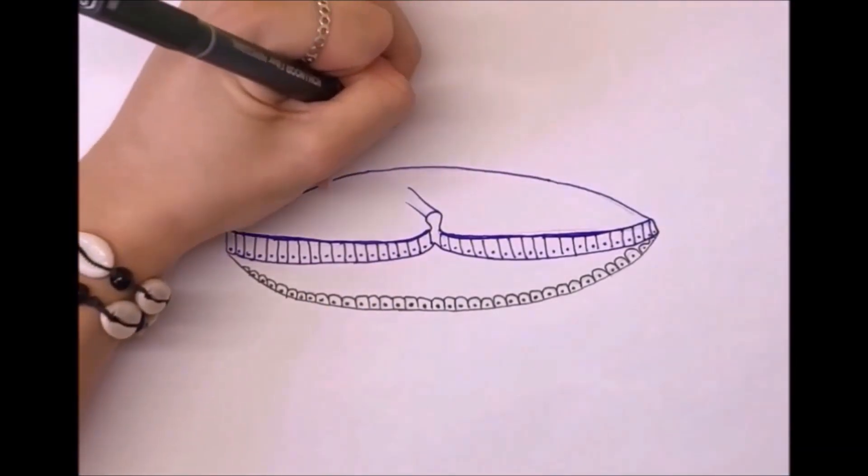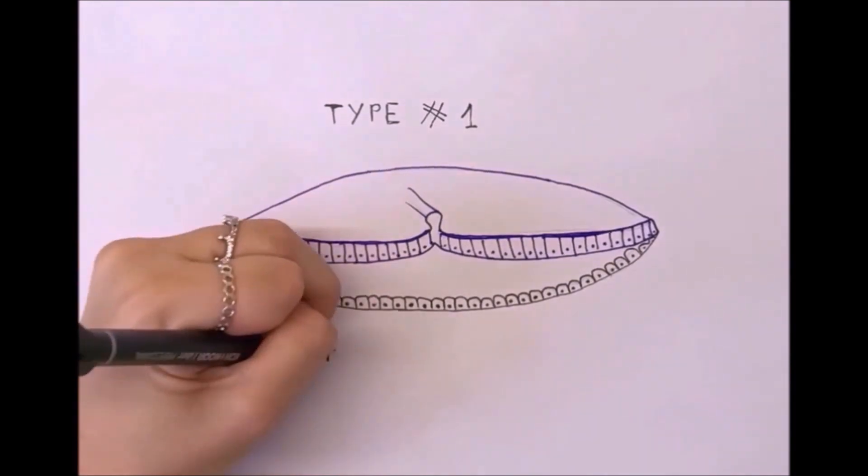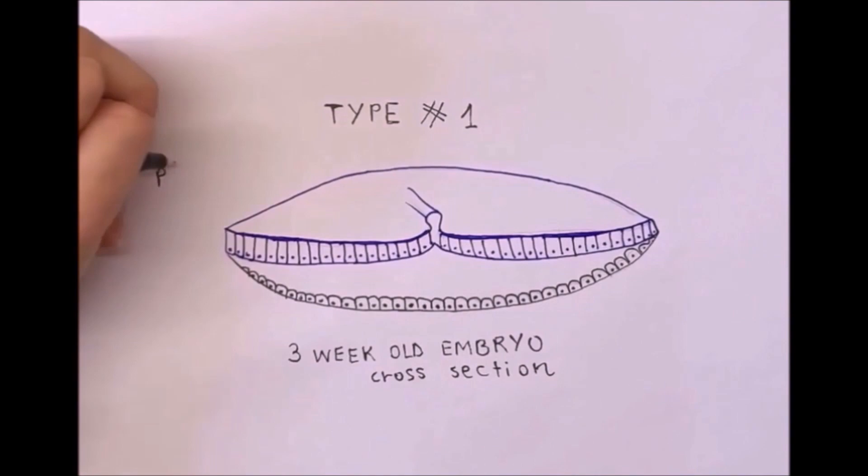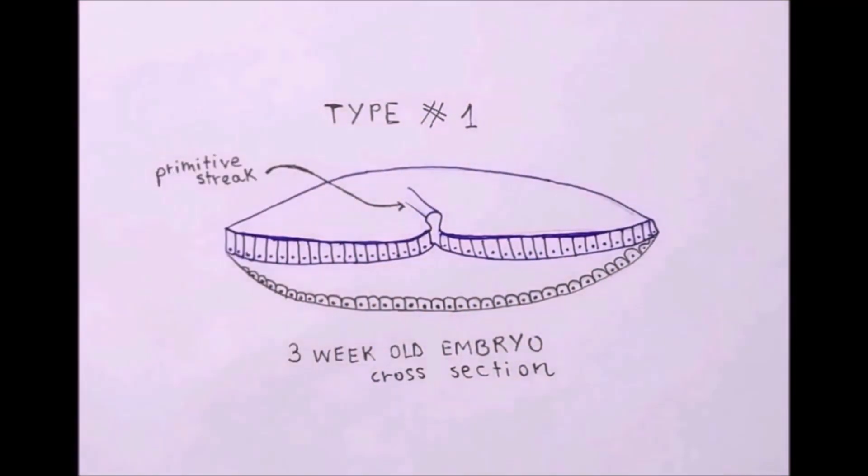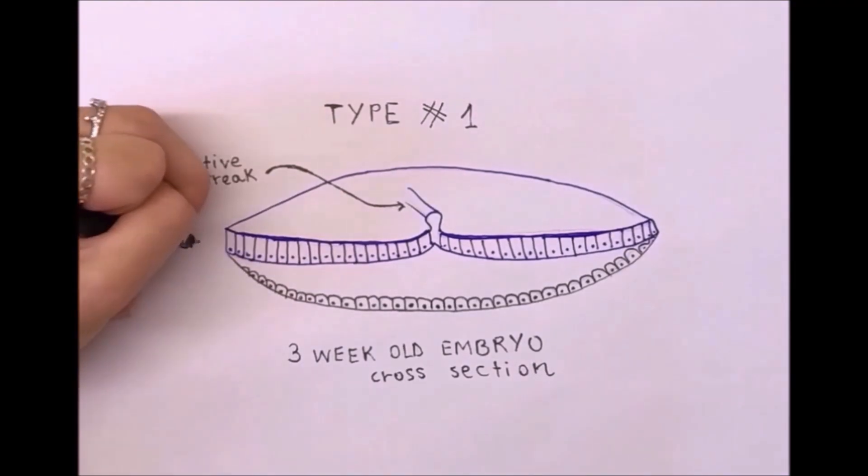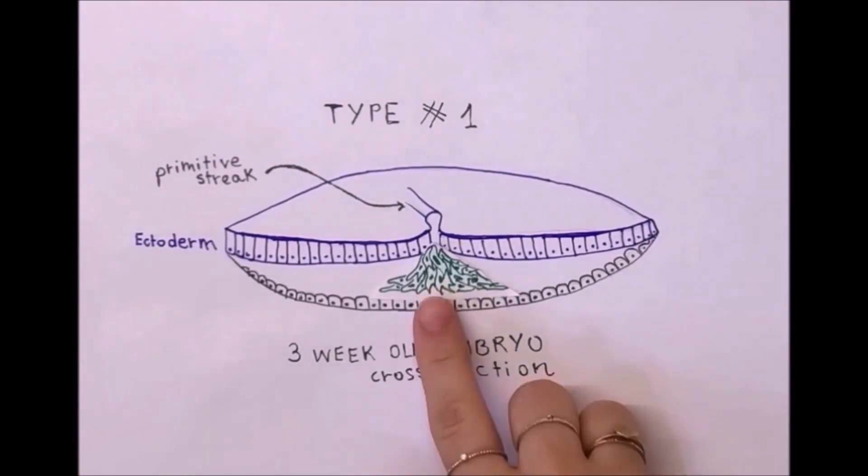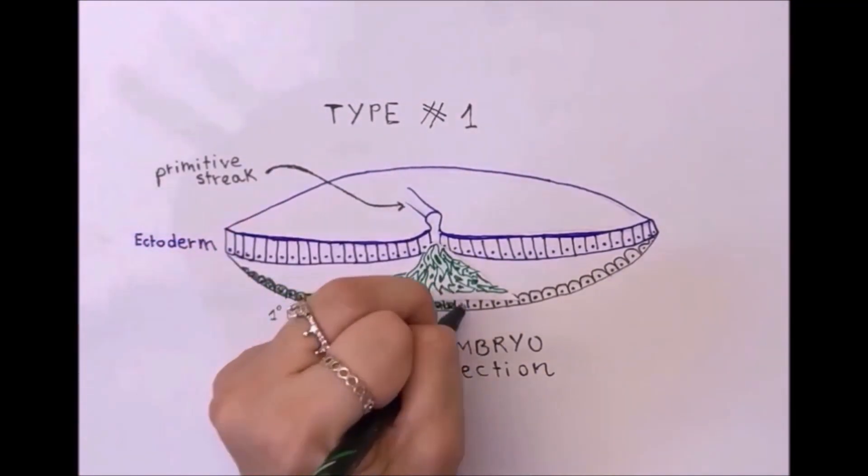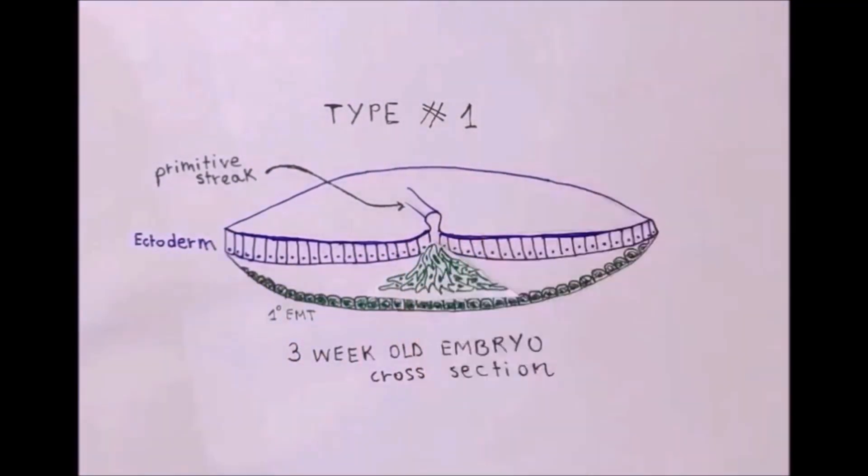There are three kinds of EMTs. The first kind of EMT that we are taking into consideration is the developmental or physiological one. This process is particularly important during the formation of the embryo. We can observe at this stage the transformation of epithelial cells to mesenchymal and the redifferentiation of mesenchymal to epithelial cells.